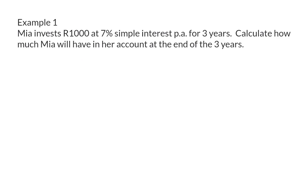Example 1. Mia invests 1000 Rand at 7% simple interest per annum for 3 years. Calculate how much Mia will have in her account at the end of the 3 years. Even though in grade 8 we only work with simple interest, there are two methods for calculating interest, and in grade 9 we also look at compound interest. That is why it is important for the question to state that it is simple interest. Here, we are given that she invests 1000 Rand at 7% simple interest per year.